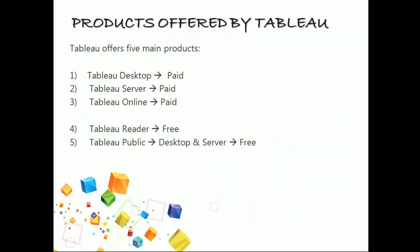Tableau has various products — five in total: Tableau Desktop, Server, Online, Reader, and Public. Tableau Public is free and can be downloaded. Tableau Desktop is paid and comes in two versions: professional and personal. The professional version costs around $1,999 and is the one companies buy licenses for. The personal version costs $999. The difference between professional and personal is the data connectivity option.